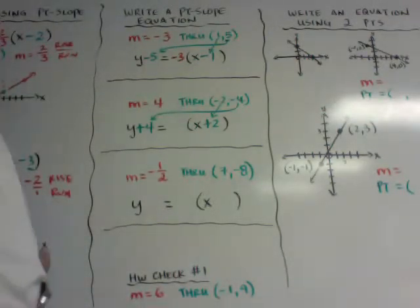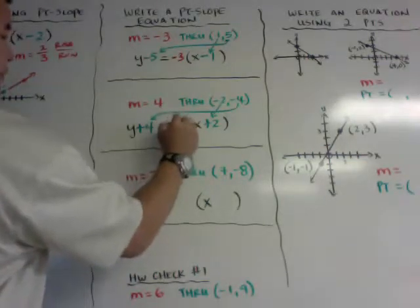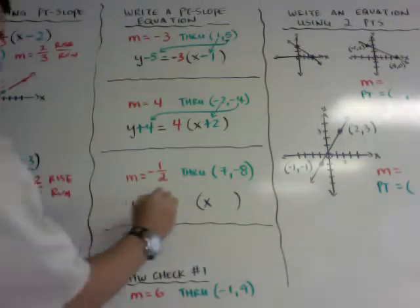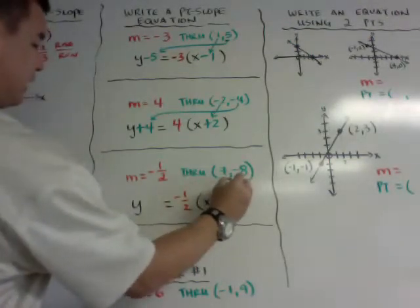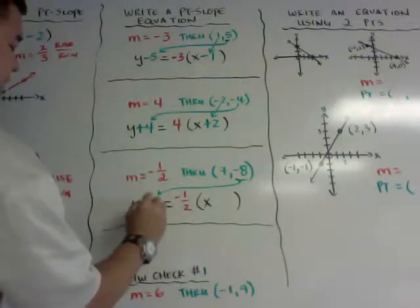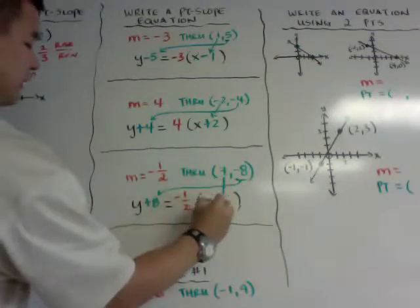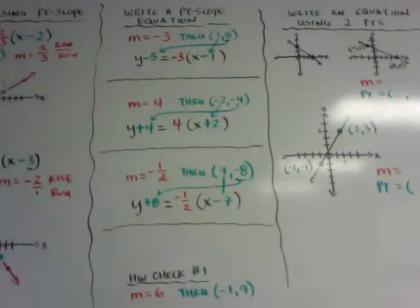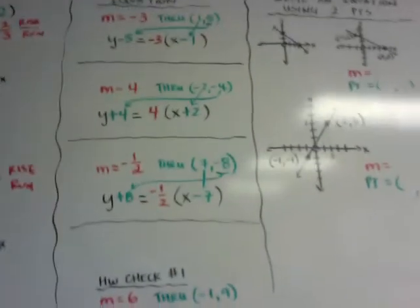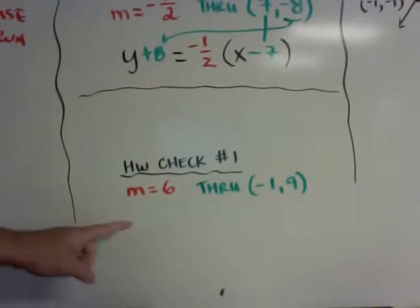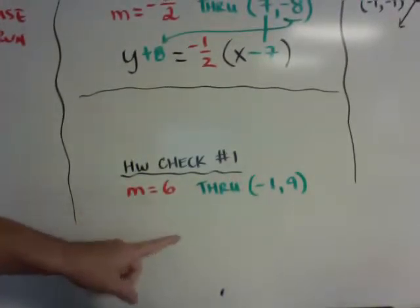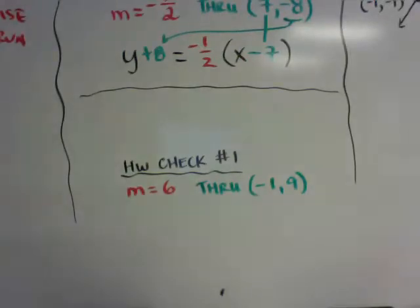Your slope is 4. Another example with slope negative one half: the y goes here and becomes plus 8, and the x becomes minus 7 because it's a positive 7. Pretty simple. Homework check number 1: please write the equation in point-slope form. If your slope is negative 6 through the point negative 1 comma 9.